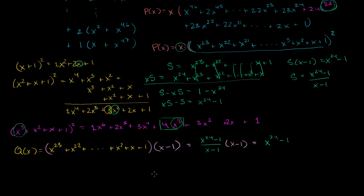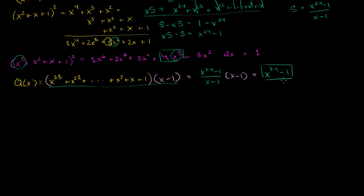So the roots we care about are actually the roots of x to the 24th minus 1, except for x equals 1, which we added to simplify. To find the roots, we set x to the 24th equals 1. This equation has 24 roots — one of them is 1, which we ignore. So we care about the 23 non-1 roots, and we need to square them and take the absolute value of their imaginary parts. These are the 24th roots of unity.